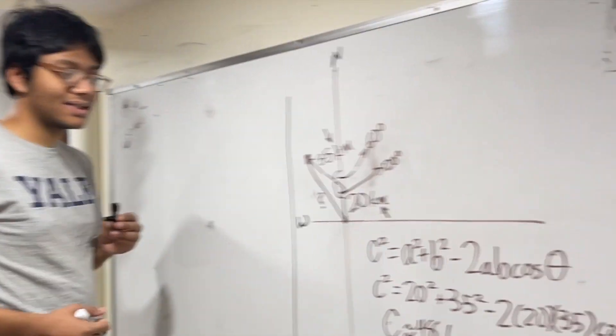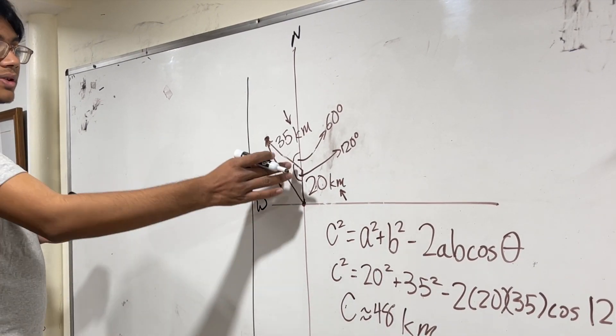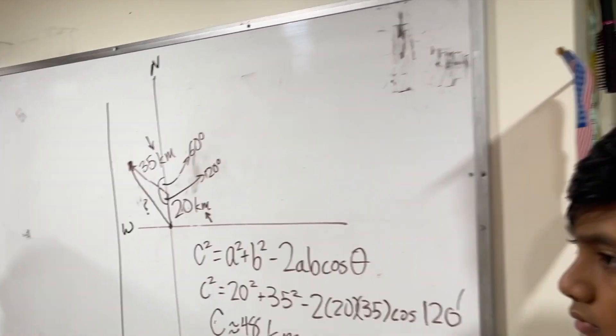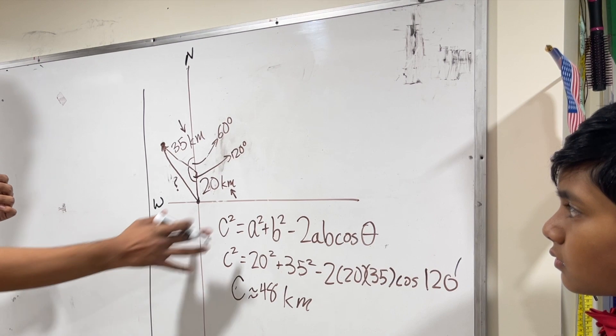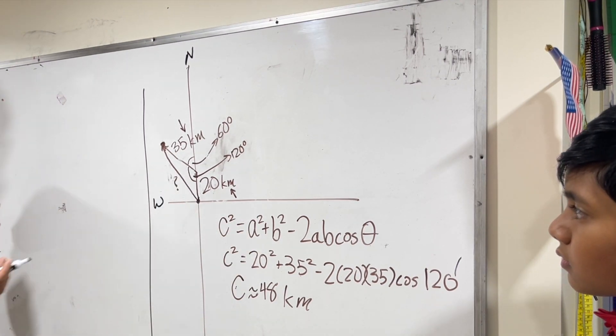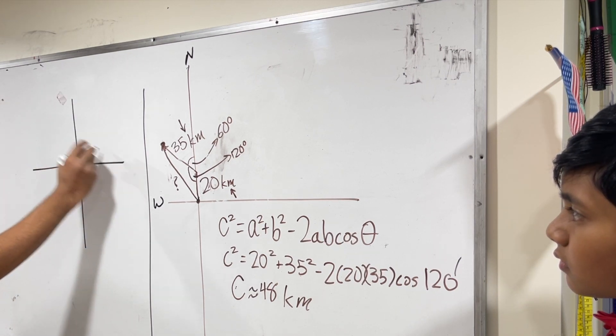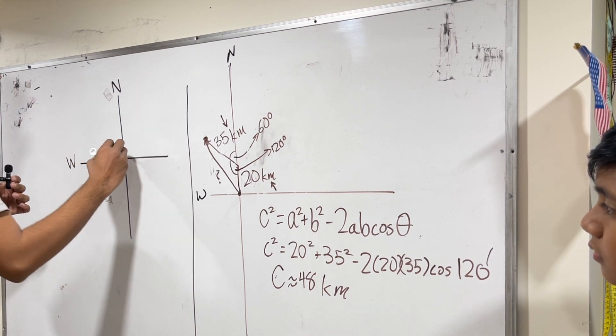Okay, folks. So let's do the exact same problem finding the resultant of 20 and 35 kilometers, where the 35 kilometers is 60 degrees outside the y-axis using the law of parallelograms. So now the law of parallelograms is identical to the law of cosines except for the angle that you use. So we have to be a little careful with that. So let's first draw our axes. We have north and west. Those are the only relevant axes in this problem.